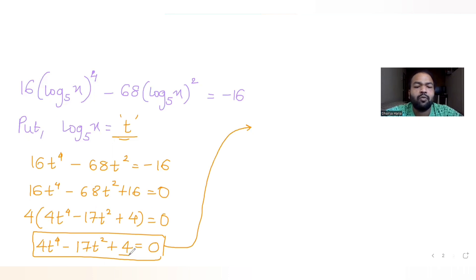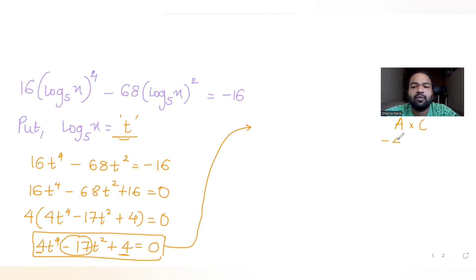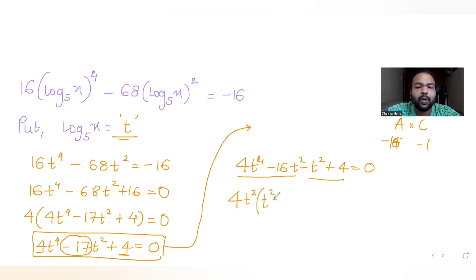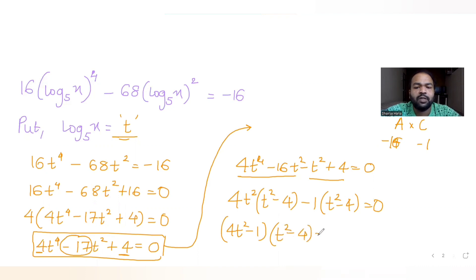To split the middle term, I need two numbers whose product is 4 × 4 = 16 and whose sum is minus 17. Those numbers are minus 16 and minus 1. Splitting: 4t⁴ minus 16t² minus t² plus 4 equals 0. Taking common factors from the first two and last two terms: 4t²(t² minus 4) minus 1(t² minus 4) equals 0, giving (4t² minus 1)(t² minus 4) equals 0.